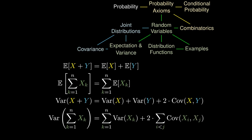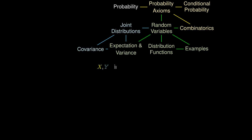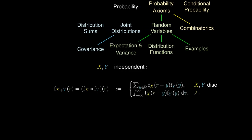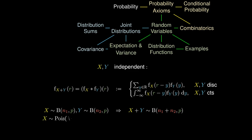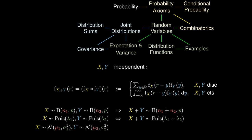What's even more fascinating is that if X and Y are independent, we can actually derive the distribution for their sum — this is known as convolution. Using this, we can show that if X and Y are both binomial, their sum is binomial; if they are Poisson, their sum is Poisson; and if X and Y are normally distributed, their sum is normally distributed as well.